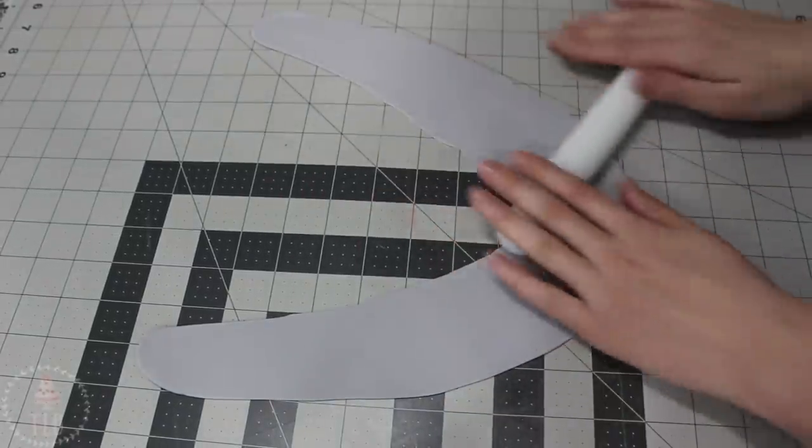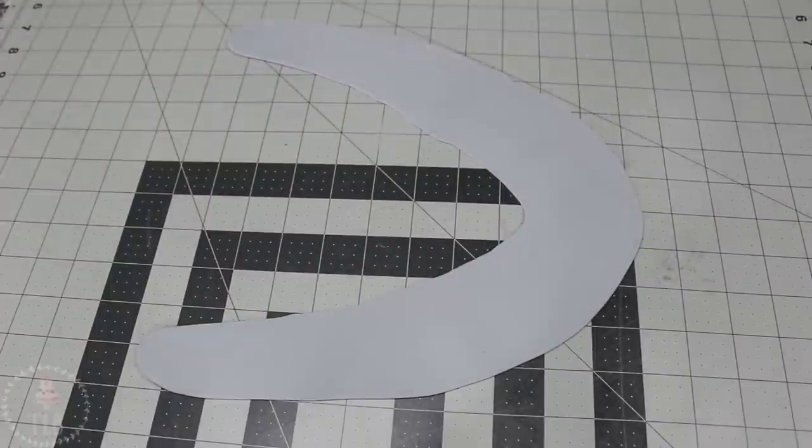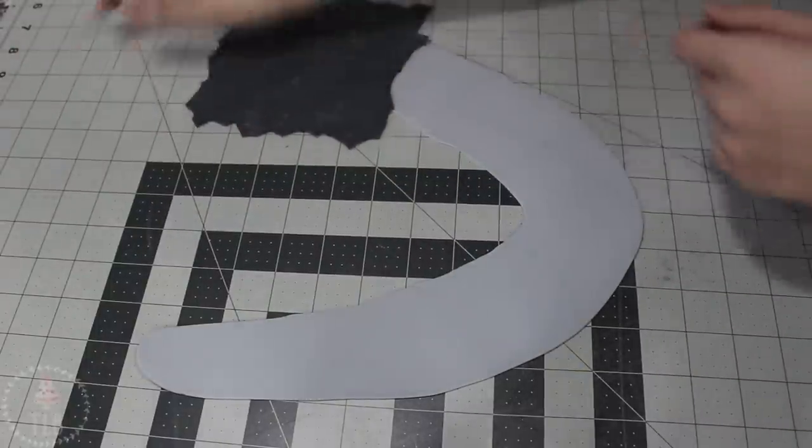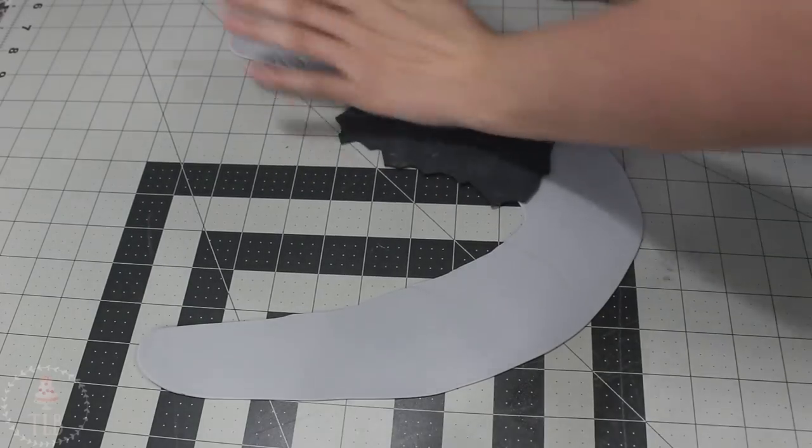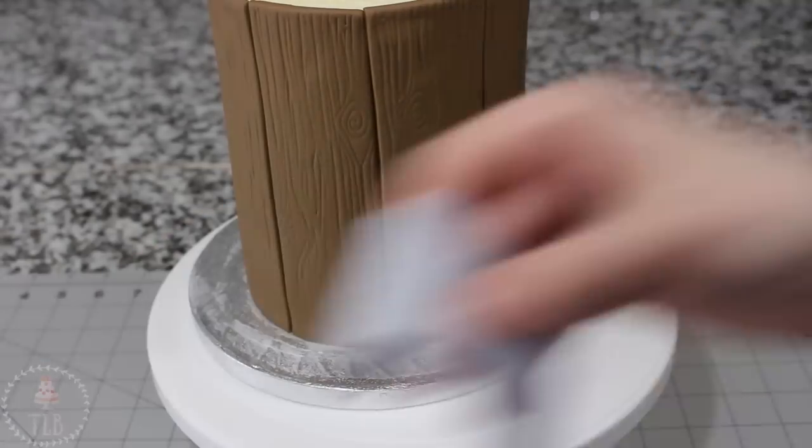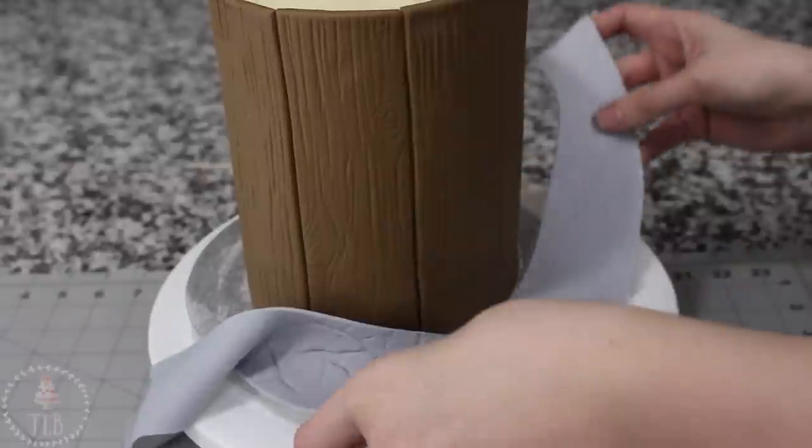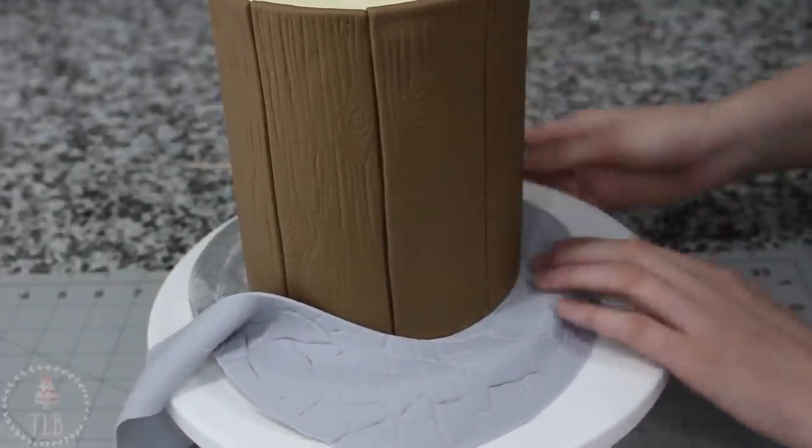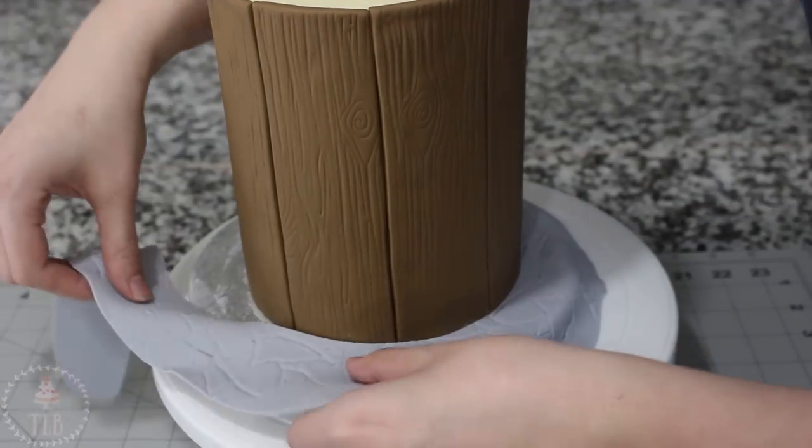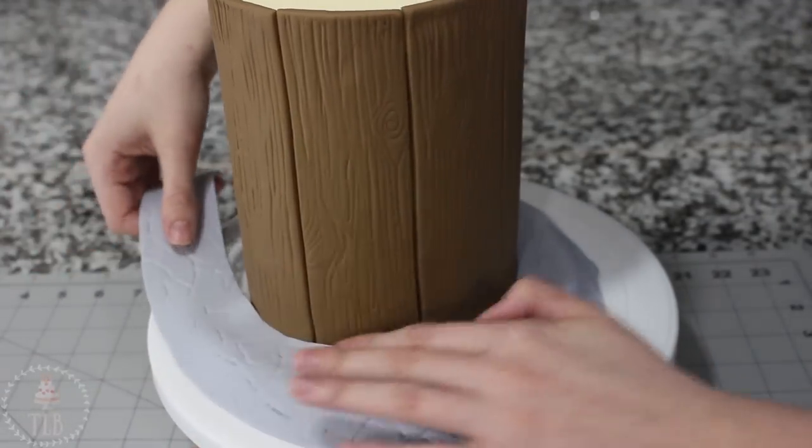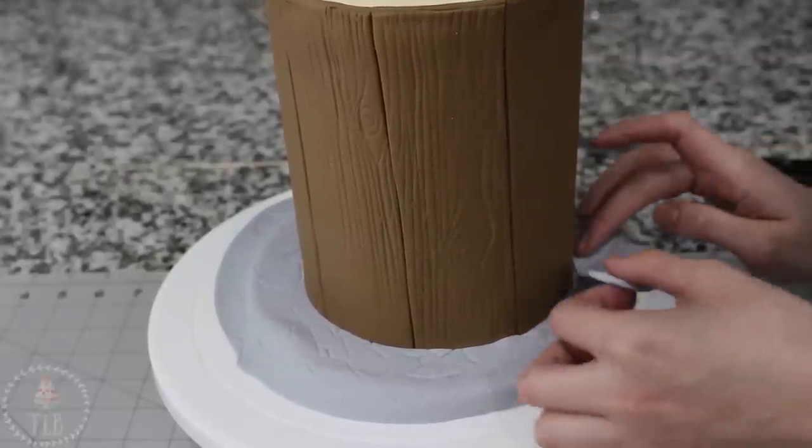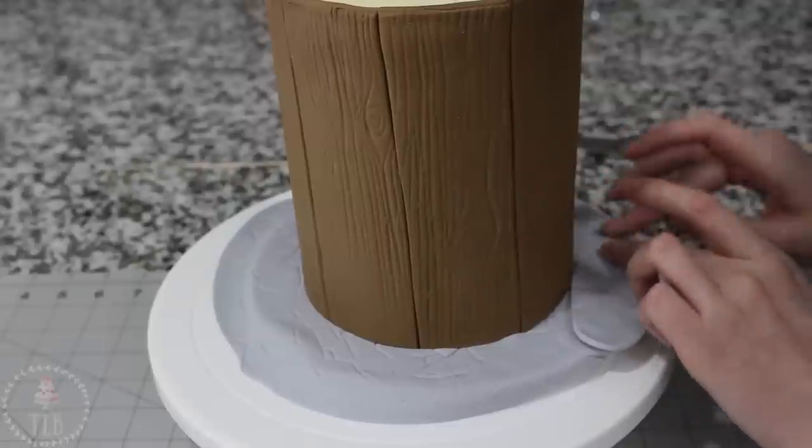I'm rolling out some gray fondant into this U-shape for the board and I'm embossing that with this cobblestone type thing I have. I rub some shortening on the board and I'm just wrapping that gray fondant around, making sure that it's right up against the cake, nice and snug. And then I just cut a seam at the back and then trimmed away the excess around the edges of the board.